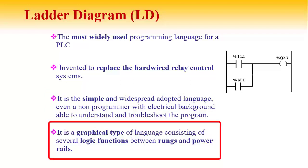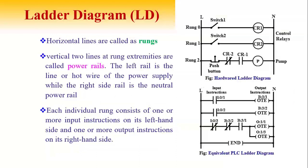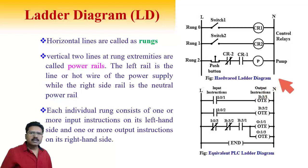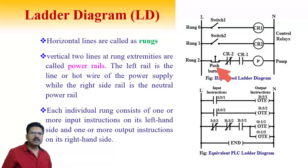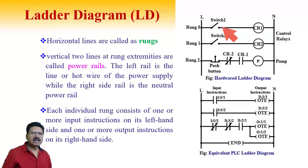Ladder is a graphical-type language consisting of several logic instructions, rungs, and power rails. To explain Ladder Diagram with a simple example: here is a hardware relay logic with three switches — Switch 1, Switch 2, and a push button. When Switch 1 is pressed, the pump turns ON (start switch). When Switch 2 is pressed, the pump turns OFF (stop switch). The push button may be used as an emergency stop switch.